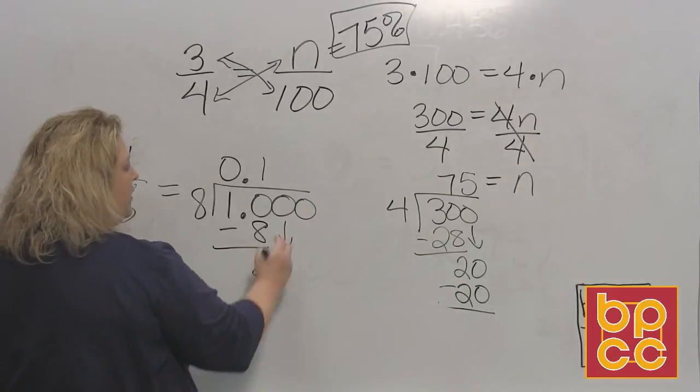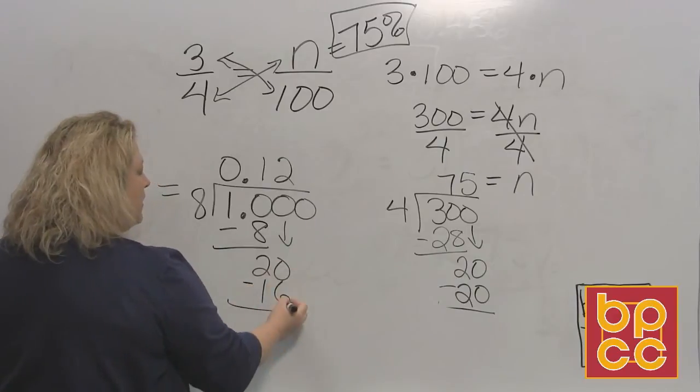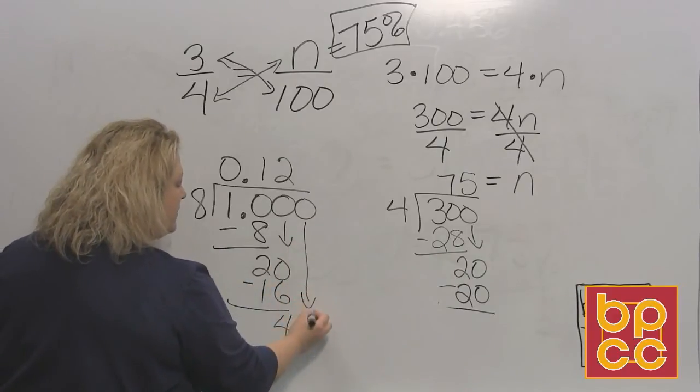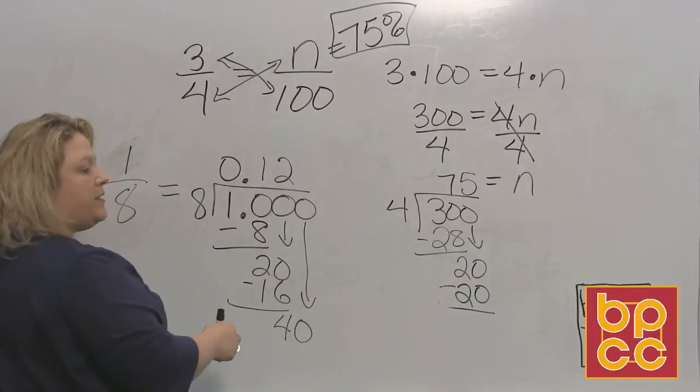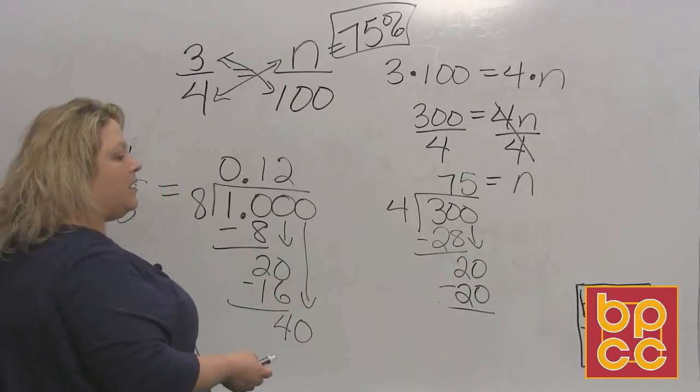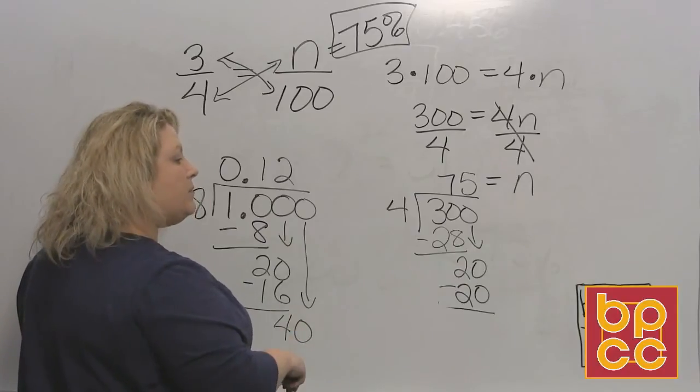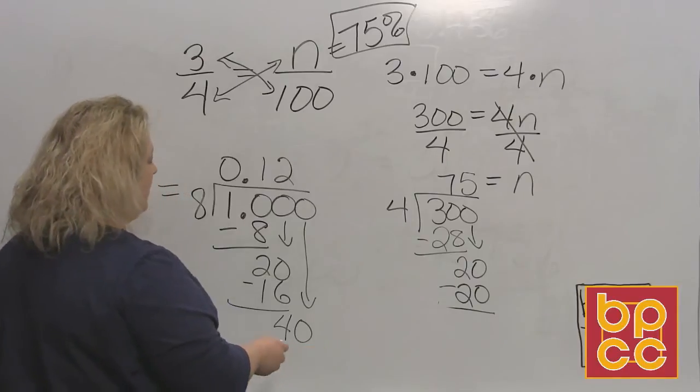8 divides into 20, 2 times, which makes 16. Subtract and I get 4. Bring down the next 0. I already added 3 zeros because I knew this was going to come out even. But if you don't know that it's going to come out even, then you just keep adding zeros until it either comes out even or you notice the pattern and you can cut it off.